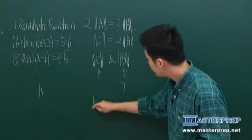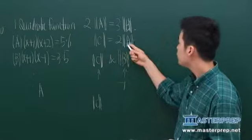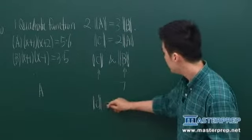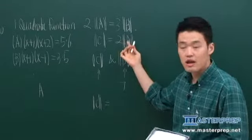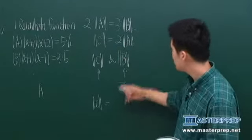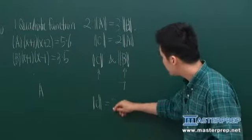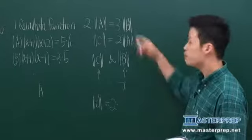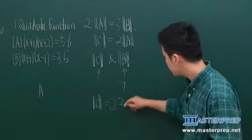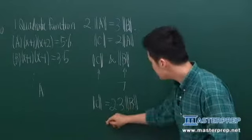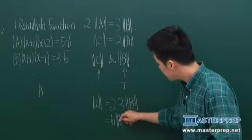which means that you could write, instead of A, you could plug A, this equation, into this equation. I wouldn't like to call this as a function because we haven't defined anything. So two times, instead of A, let's plug three times B.